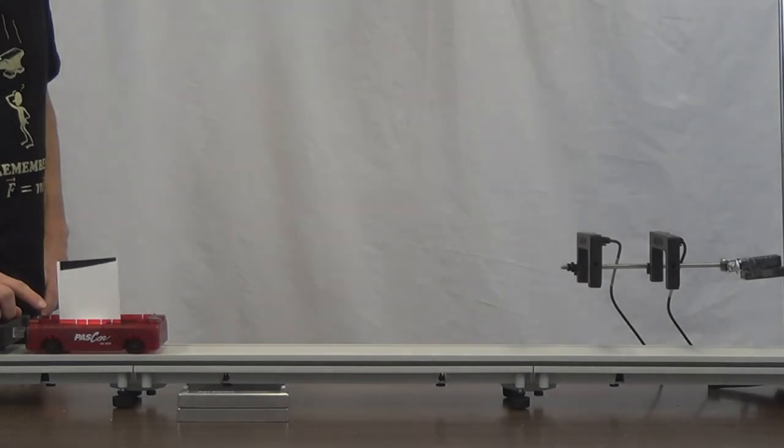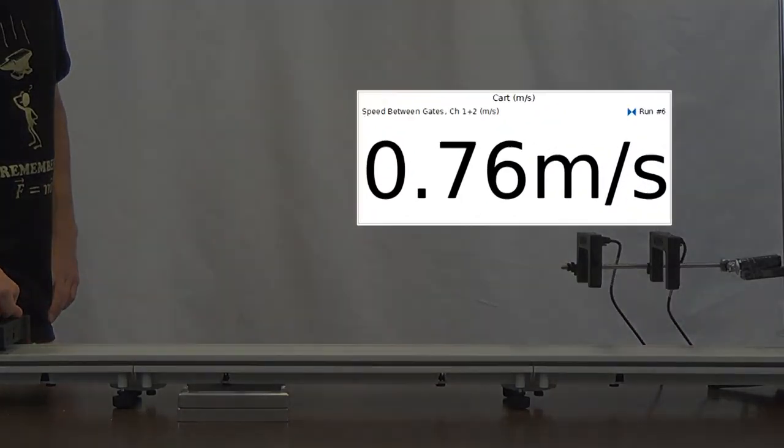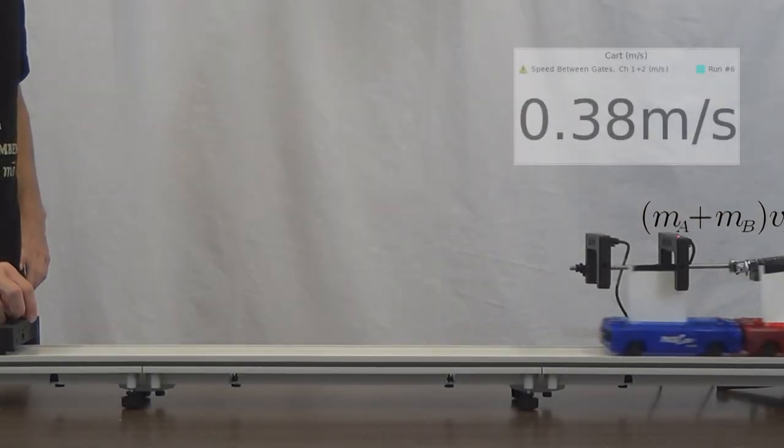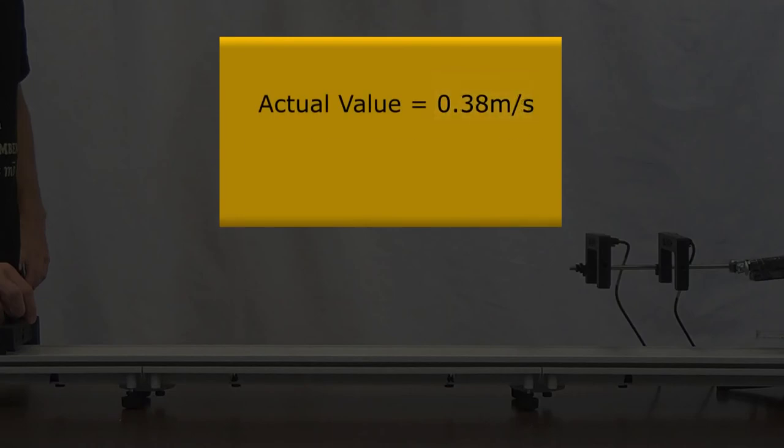To begin our experiment, we will first measure the initial velocity of the cart, 0.76 meters per second. As the test progresses, we will display the measured velocity post-collision and compare it with our predicted value.